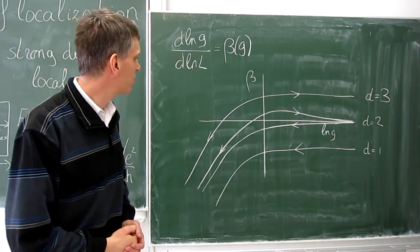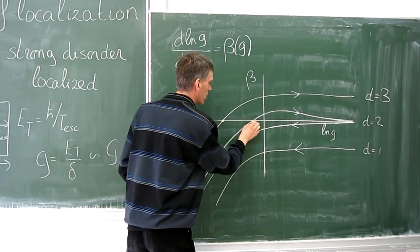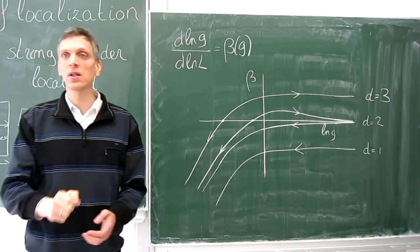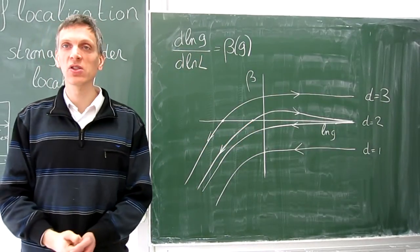The localized and metallic phases are separated by a point where beta is zero. So, at this point, there is a metal insulator transition.